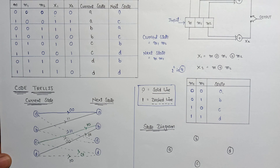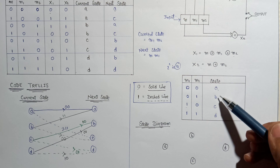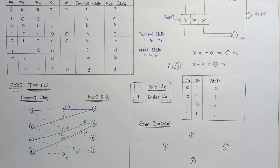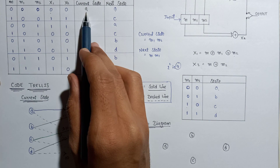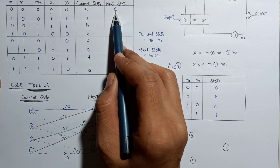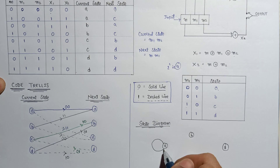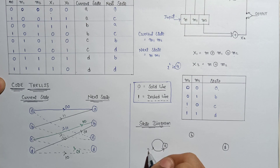Now let us have a look at the state diagram representation. Since we have 4 states A, B, C, and D, here are the 4 states. Let's join them on the basis of the table. If the current state is A and the input message bit is 0, then the next state is A, so we use solid lines, and the output is 00.